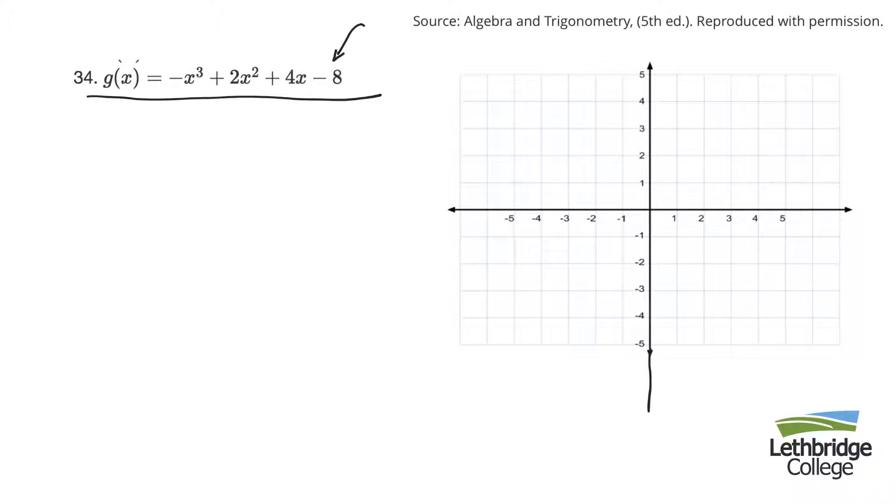So the y-intercept is negative 8. So down here, negative 6, negative 7, negative 8. That's where the graph is going to cross the y-axis.